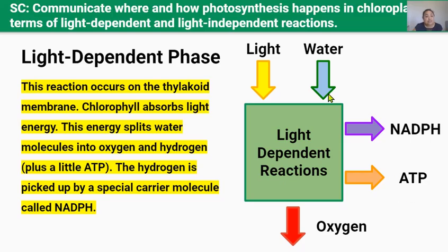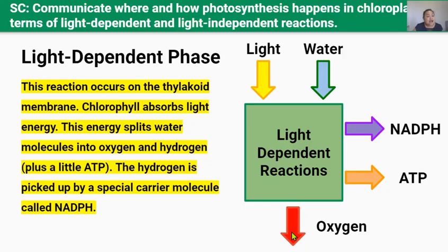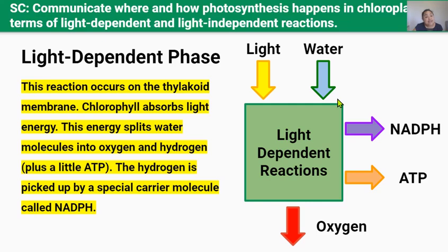After water has been split into hydrogen and oxygen, the oxygen is released from the plant through the stomata in the leaves, and this oxygen becomes part of the air we breathe. The hydrogen from this water is taken to the light-independent phase by a carrier molecule called NADPH. This NADPH containing hydrogen, along with the ATP produced in the light-dependent phase, provides the chemical energy needed to make glucose in the next phase.